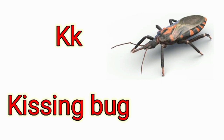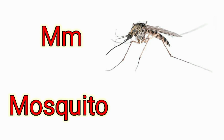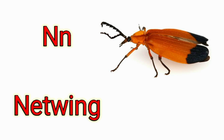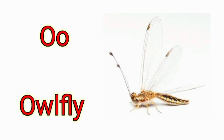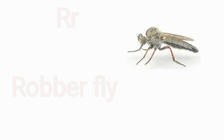K is for Kissing Bug. L is for Lacewing. M is for Mosquito. N is for Netwing. O is for Owlfly. P is for Plant Hopper. Q is for Queen Butterfly. R is for Robber Fly.